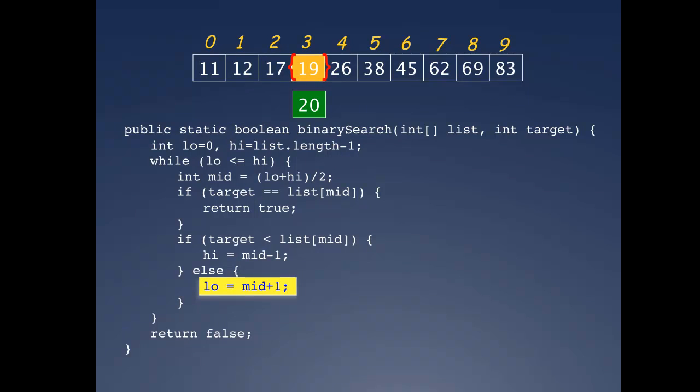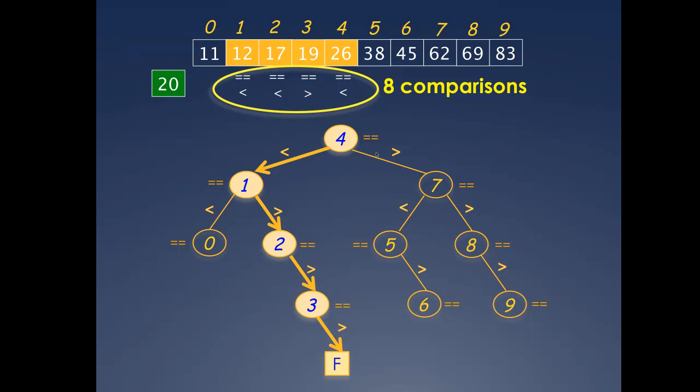But 20 is not equal to 19, so an extra comparison would be made to check if 20 is less than 19. It's not, so low would be incremented by 1 and become 1 more than high. The while loop would terminate and the method would return false. So the search for 20 would fail after using up 8 comparisons, one more than that for 19.